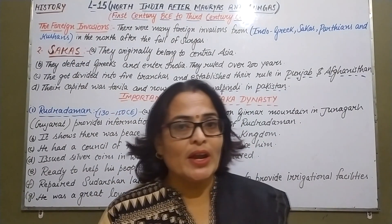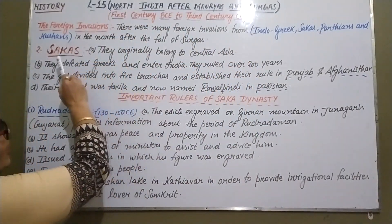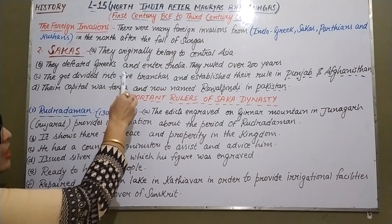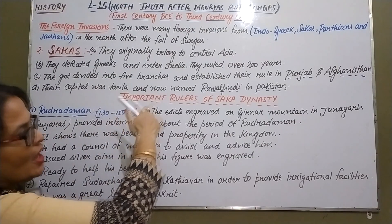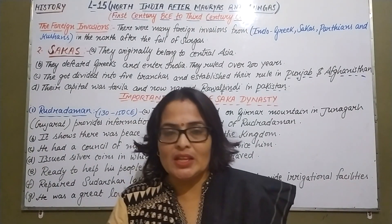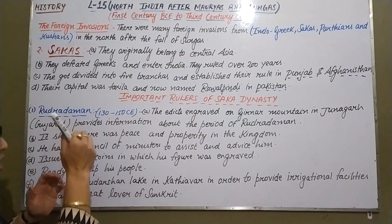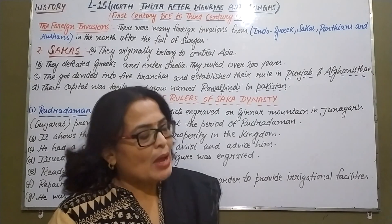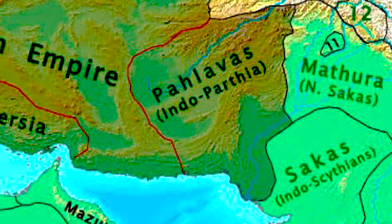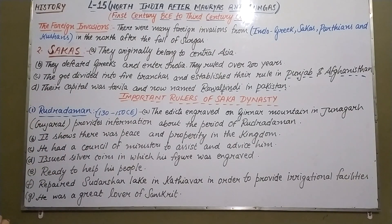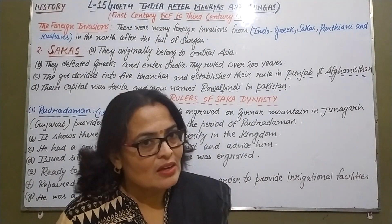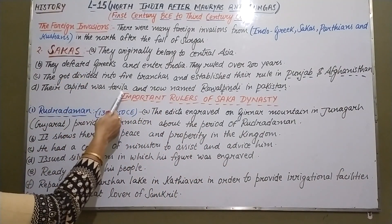Now about the Sakas. The Sakas originally belonged to Central Asia. They defeated the Greeks and entered India, ruling for about 200 years. After coming here, they divided into five branches and established their rule in Punjab and Afghanistan. Their capital was Taxila, which is now known as Rawalpindi in modern Pakistan.